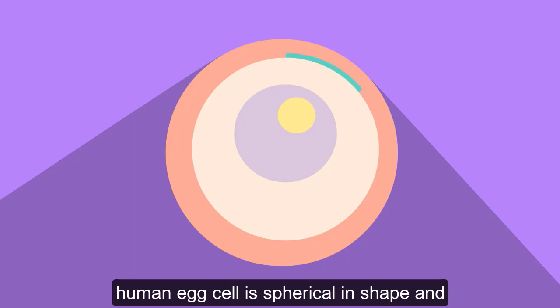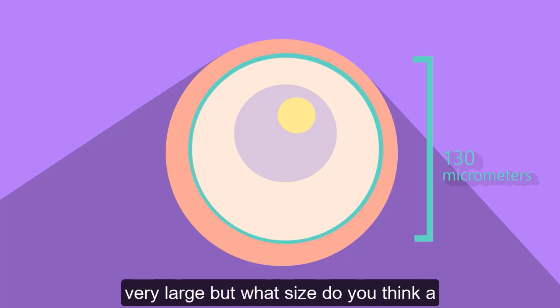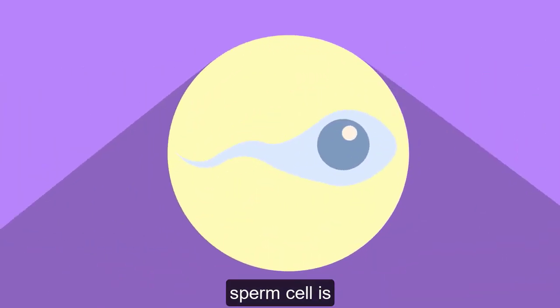A human egg cell is spherical in shape and around 130 micrometers in diameter. That's 0.13 millimeters. Not very large, but what size do you think a sperm cell is?